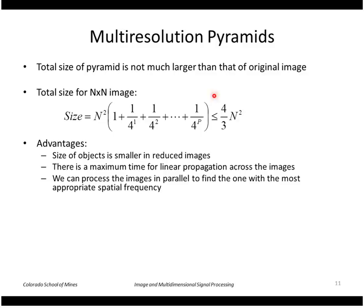So with only 1 third more storage, we can store the entire pyramid versus just the original image. And similarly, the processing time for an entire pyramid would not be that much larger than an original image. So this lends some ideas to efficient processing. Namely, we can process the images in parallel to find the one with the most appropriate spatial frequency.